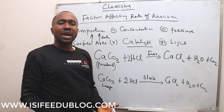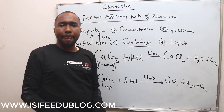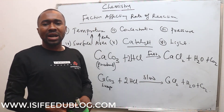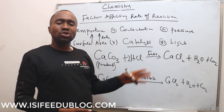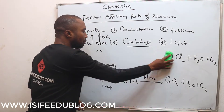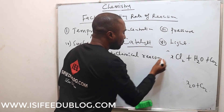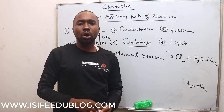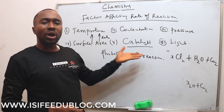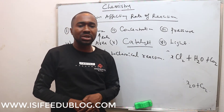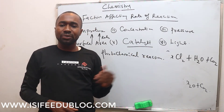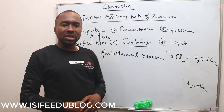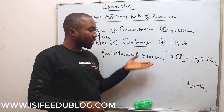Next is light. There are some reactions that cannot occur in the dark — there must be presence of sunlight before the reaction can take place. Such a reaction is called a photochemical reaction. A photochemical reaction simply means a reaction that requires light before it can occur. When there is no light, such a reaction cannot take place. An example is photosynthesis, which cannot occur in the absence of light — light must be present, so photosynthesis is a photochemical reaction.